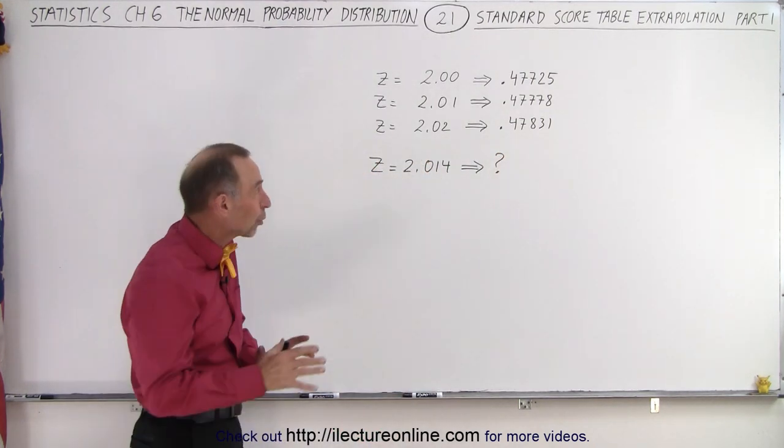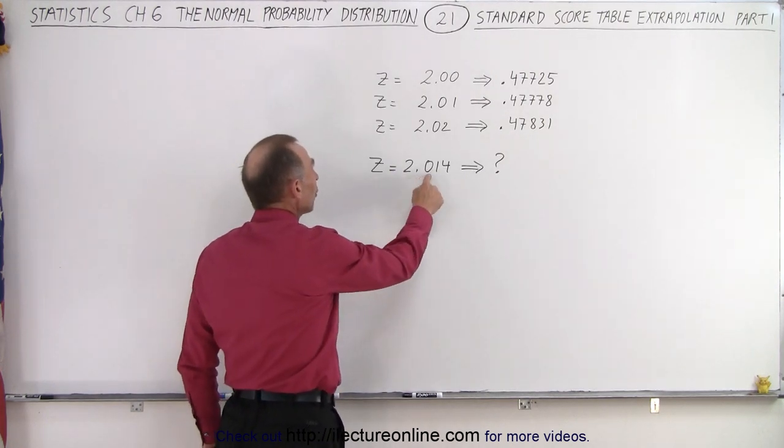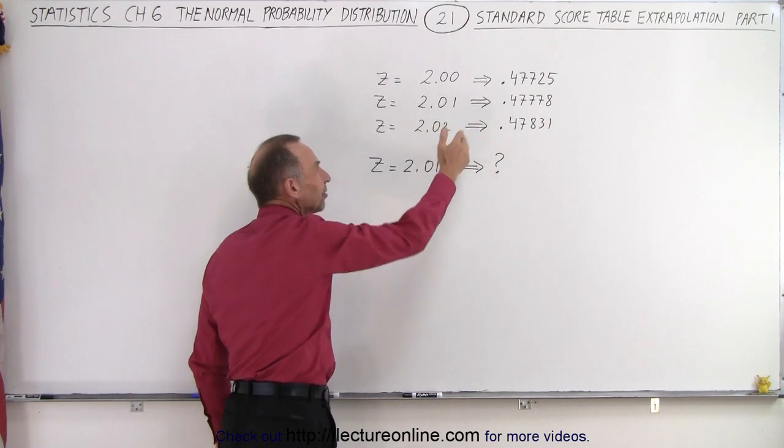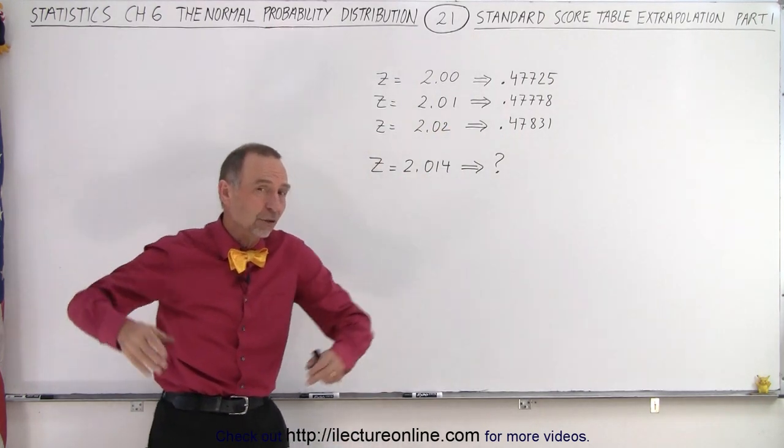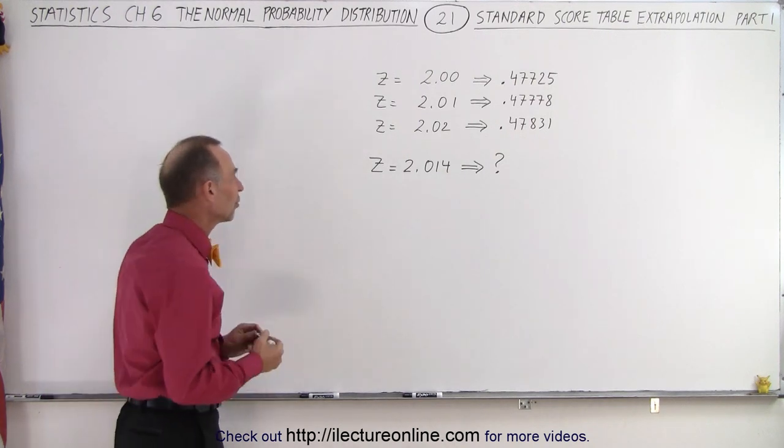But what if we want to find the corresponding value in the table for a Z value of 2.014? It falls somewhere between these two values and we have nothing in the table that tells us what that value is.